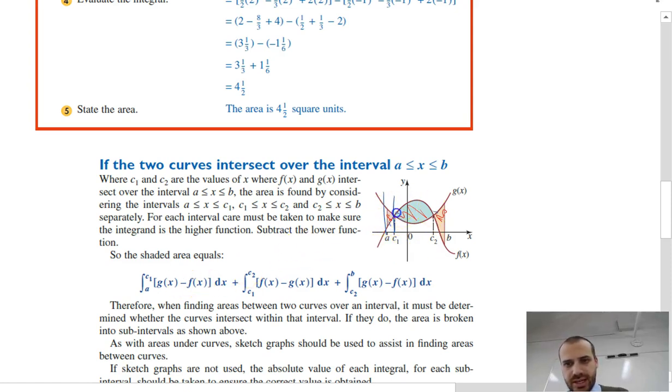Now, if we want to find this next middle bit, we go between c2 and c1, top function, which is f of x, minus bottom function, which is, in this case, g of x.